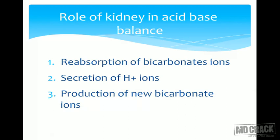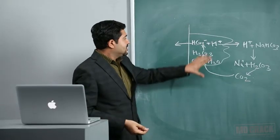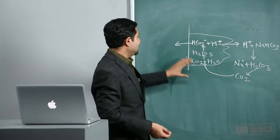Now we will see the role of the kidney in acid-base balance. The kidneys can reabsorb bicarbonate ions that have been filtered at the glomerulus — a large amount of bicarbonate is filtered and all of it needs to be absorbed back, otherwise bicarbonate loss will create acidosis. The kidneys can also secrete H+ ions and produce new bicarbonate ions.